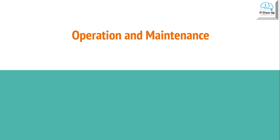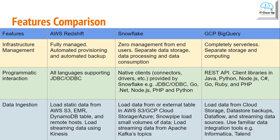Let's compare the features in the following areas. The first one is infrastructure management. AWS Redshift is fully managed with automated provisioning and automated backup. GCP BigQuery is completely serverless — it separates storage and computing. Snowflake is zero management from end users, separating data storage, data processing, and data consumption.